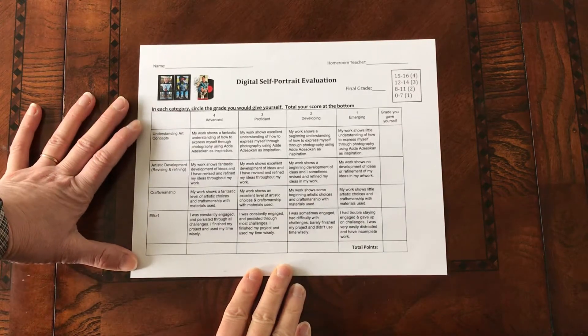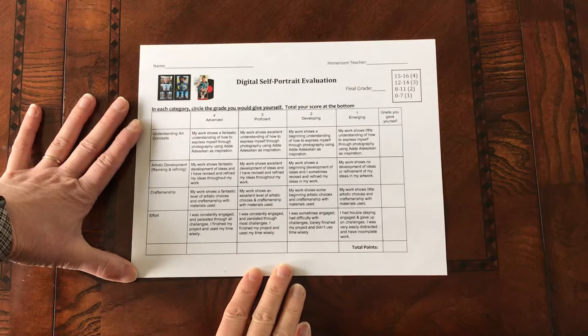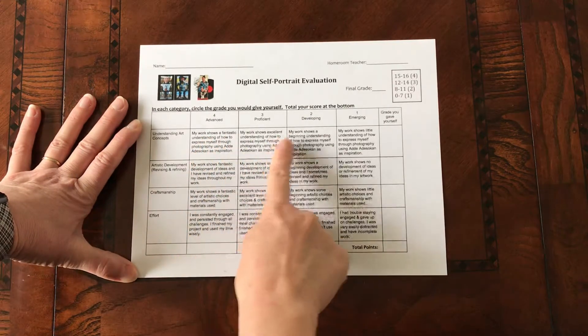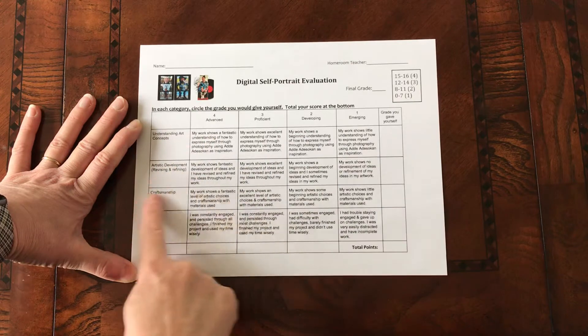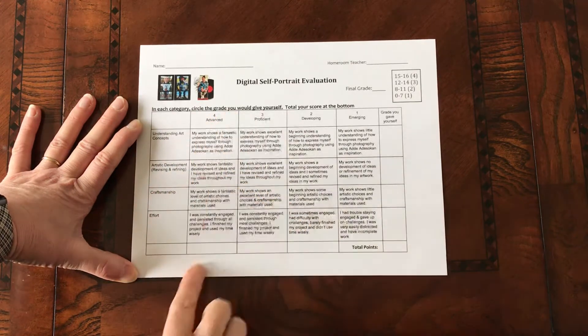Just like you did before for your portrait drawing, you are going to go in and circle the areas underneath each strand as to how you feel you did.